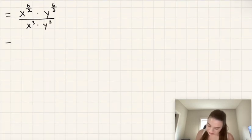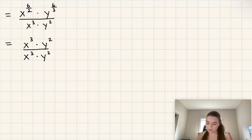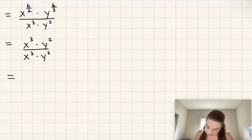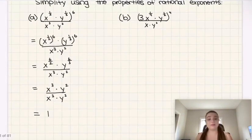Then we simplify: six over two is three, so we have x cubed. And six over three is two, so we have y squared. That gives us x cubed times y squared over x cubed times y squared. When we divide the same expression by itself, we get one. So this whole expression A simplifies to one, which is pretty interesting.